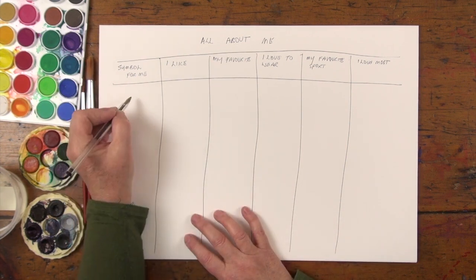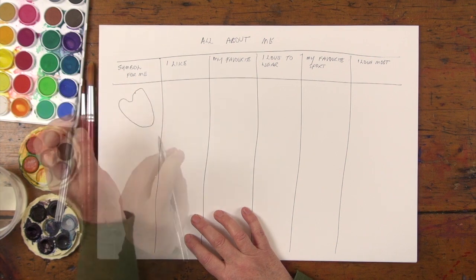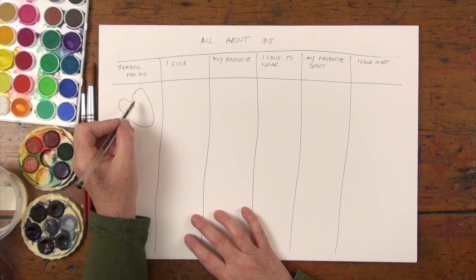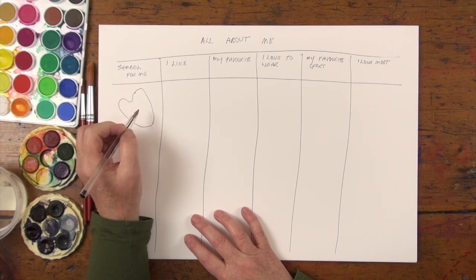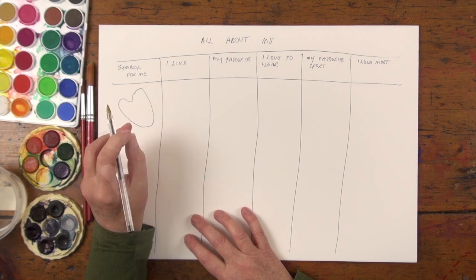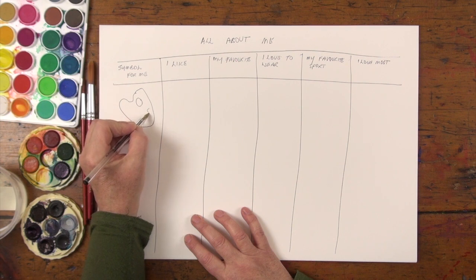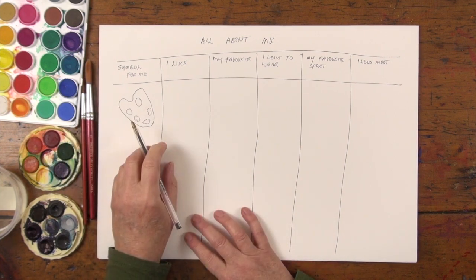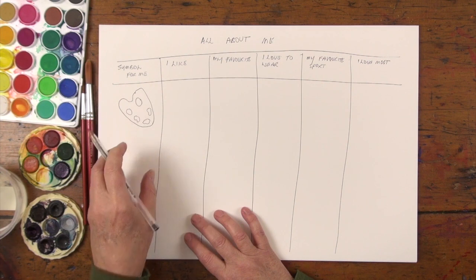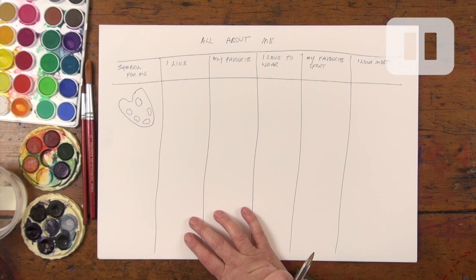For 'symbol for me' — I'm an artist, so my symbol is going to be a palette. When we do these drawings, we want to keep them really clean, just clear line drawings with only as much detail as we need to describe the symbol, and a couple of splashes of paint. If you're unsure about your symbol, use the whole column to play around with various symbols until you get the one that's right for you.